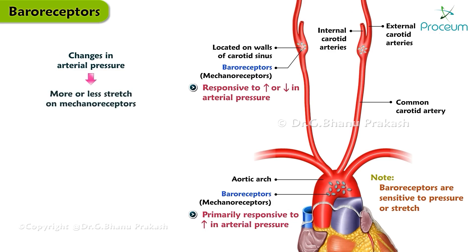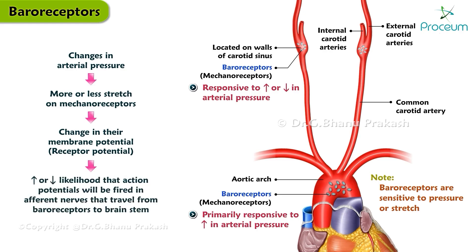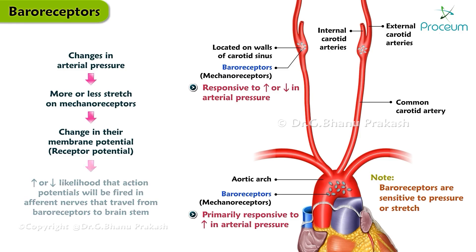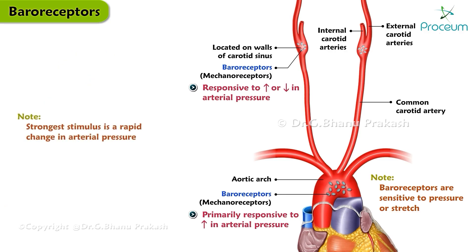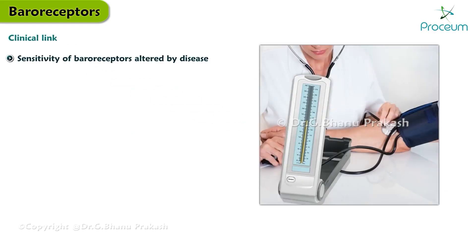The baroreceptors are sensitive to pressure or stretch. Thus, changes in arterial pressure cause more or less stretch on the mechanoreceptors, resulting in a change in their membrane potential. Such a change in membrane potential is a receptor potential, which increases or decreases the likelihood that action potentials will be fired in the afferent nerves traveling from the baroreceptors to the brainstem. If the receptor potential is depolarizing, action potential frequency increases; if hyperpolarizing, action potential frequency decreases. Note that the strongest stimulus for the baroreceptors is a rapid change in arterial pressure.